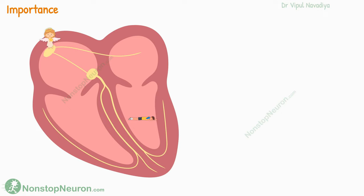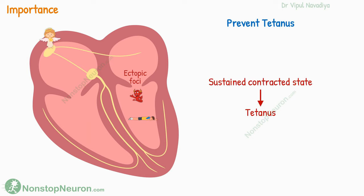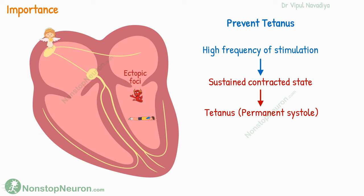Talking about the importance of the refractory period: if there are any pathological ectopic pacemaker foci generating impulses, the refractory period minimizes the stimulation of heart muscle cells from those abnormal impulses. In simple words, it helps maintain the normal rhythm of contraction. Also, it prevents tetanus of cardiac muscle in such pathological conditions. Tetanus is basically a sustained contracted state of muscle due to a very high frequency of stimulation, which means a permanent systole without any diastole — and this is prevented by the refractoriness.